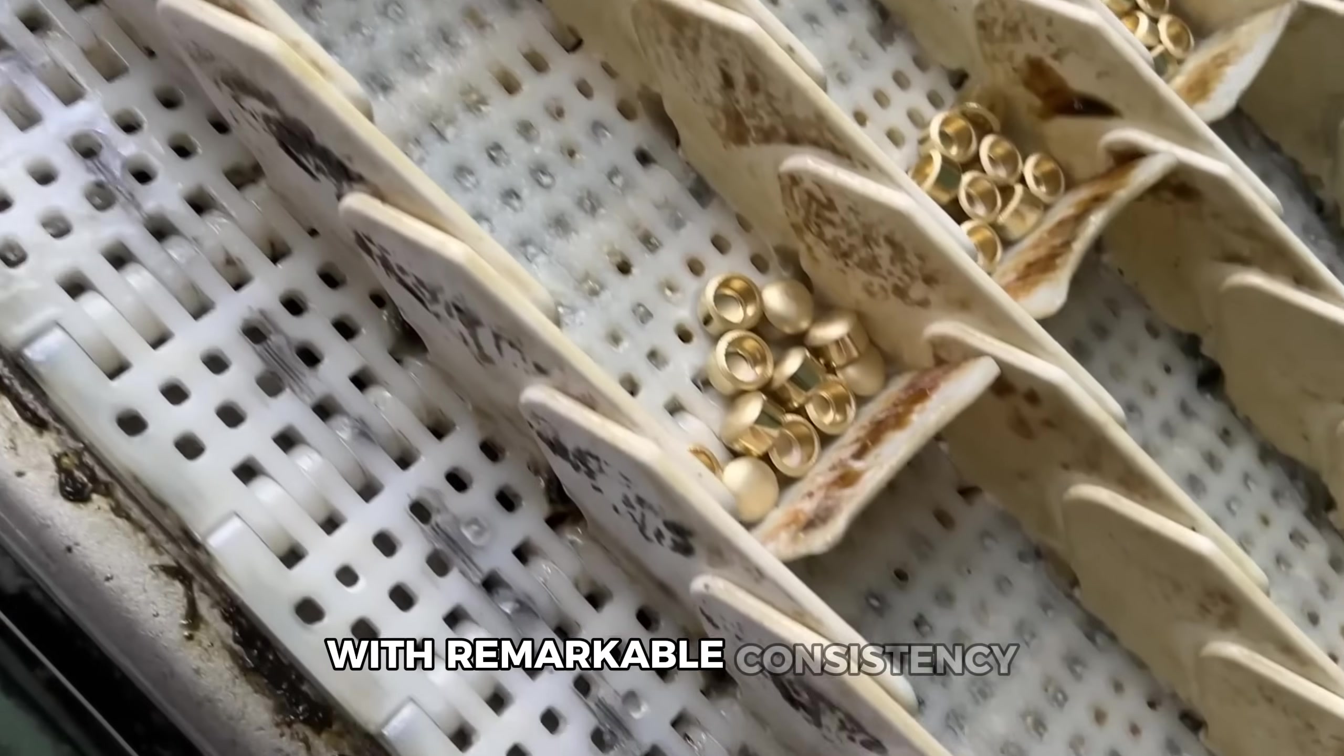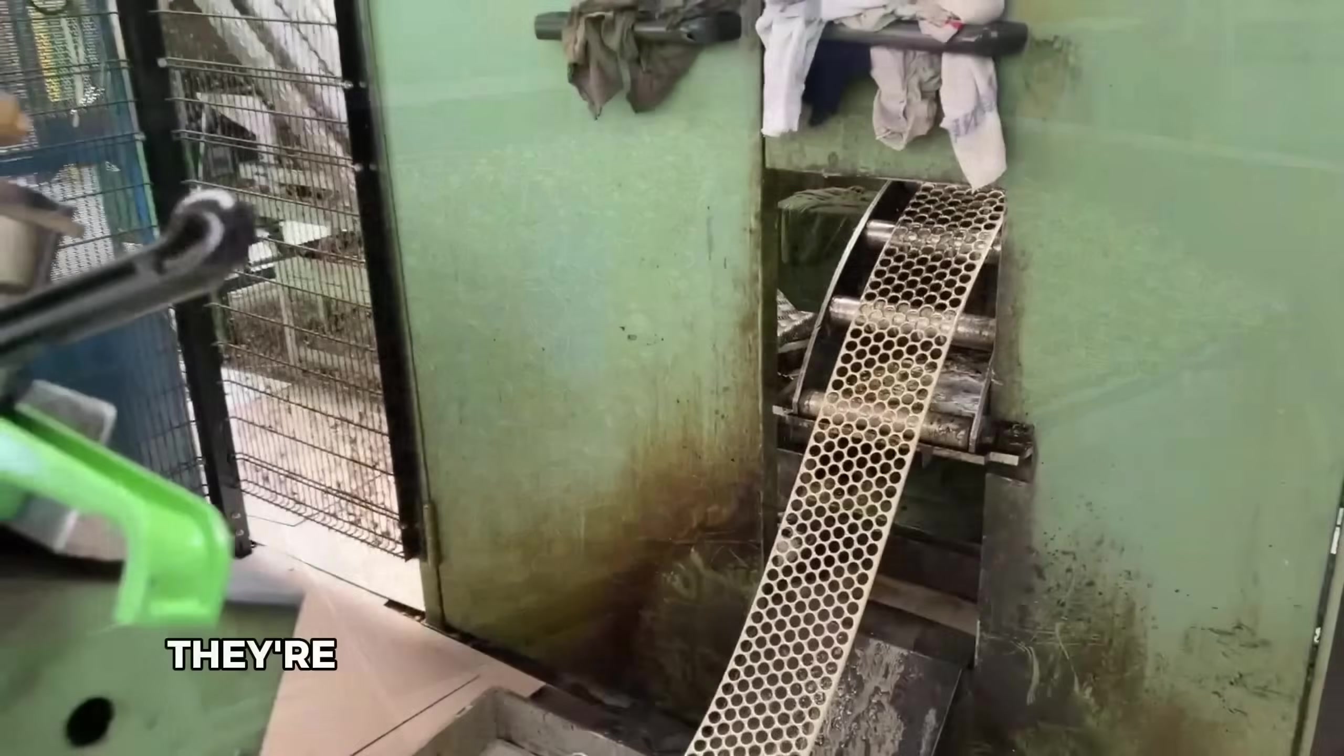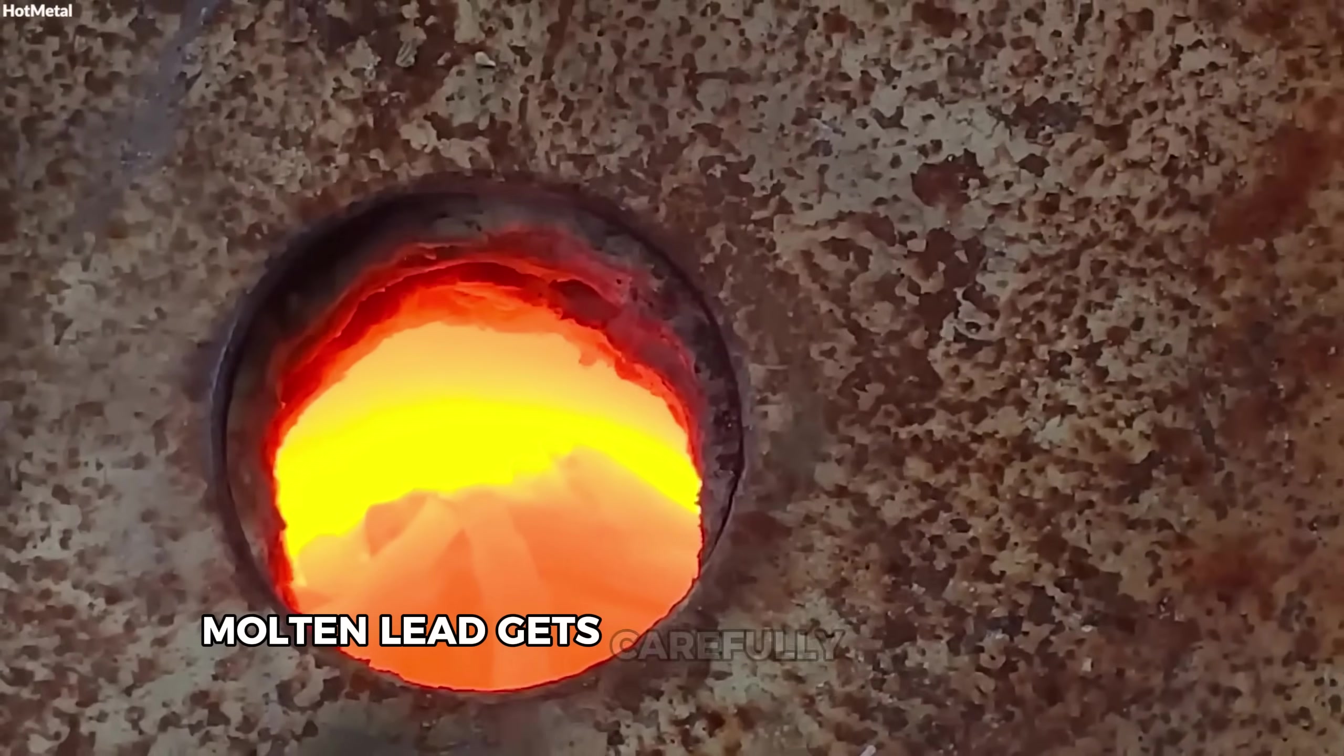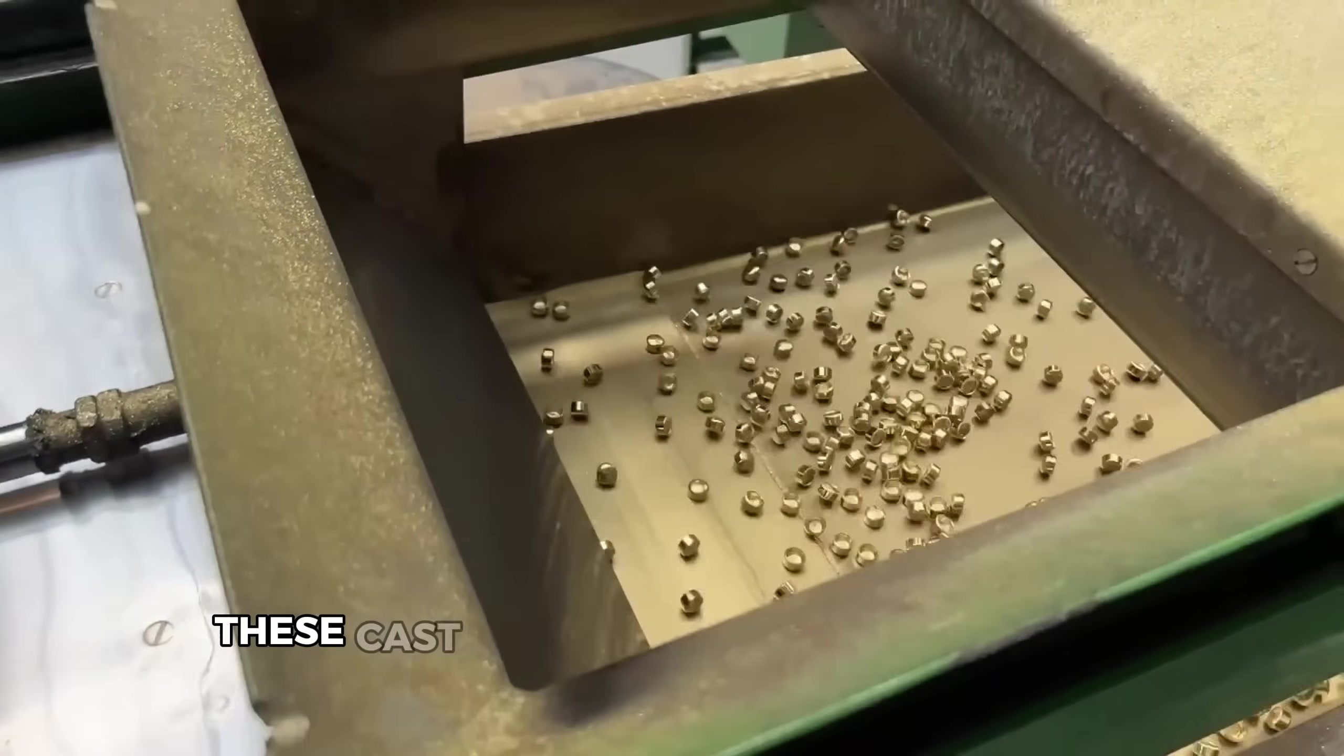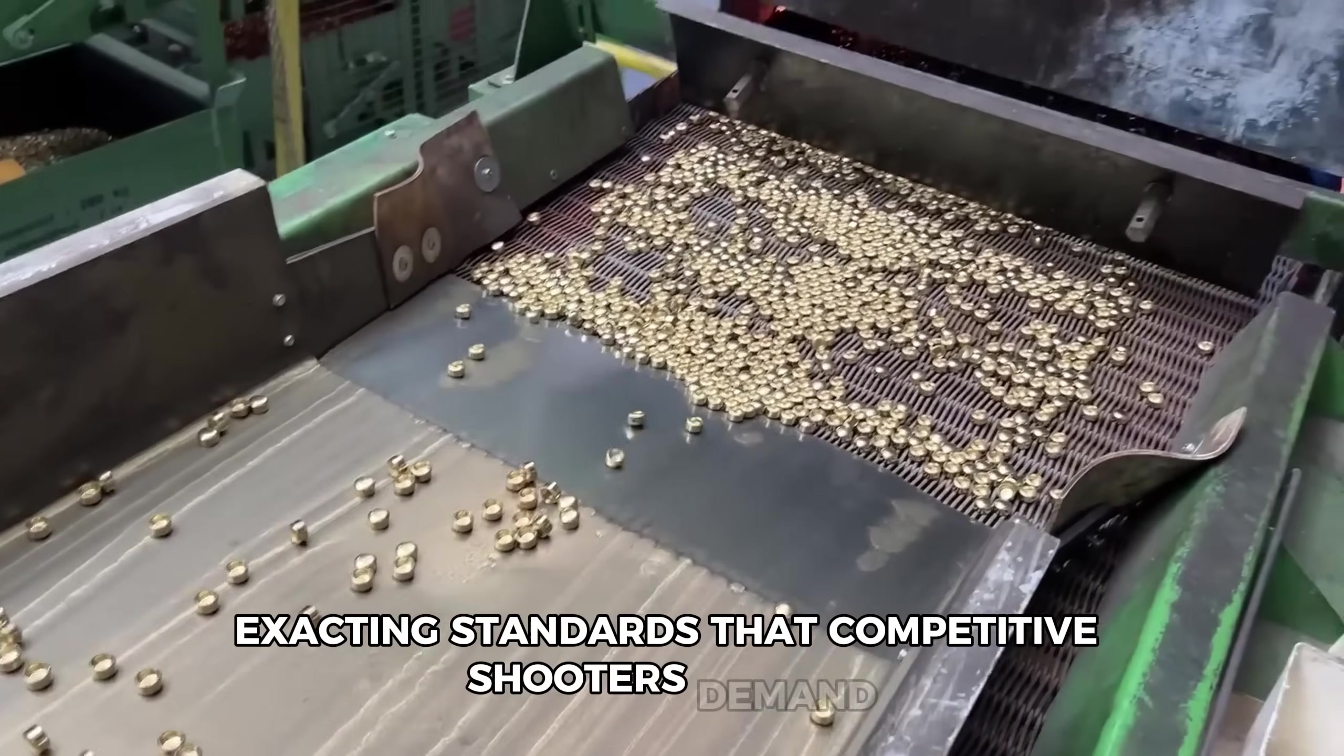Look at those craftsmen working with specialty equipment. They're creating competition-grade bullets through casting, offering greater control for precision shooting. Molten lead gets carefully poured into precision molds designed for specific bullet geometries. Once cooled, these cast bullets undergo additional finishing to meet exacting standards that competitive shooters demand.